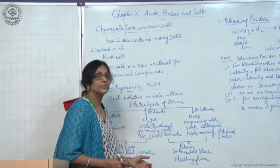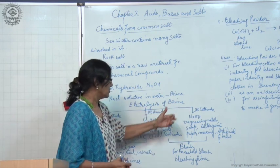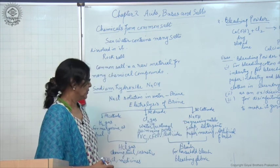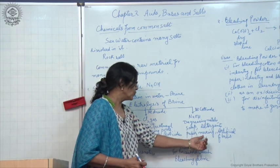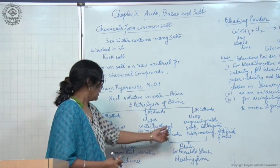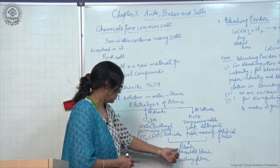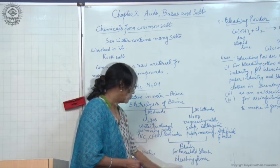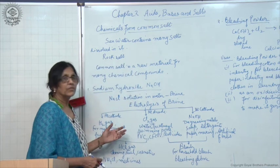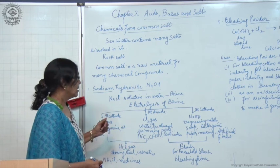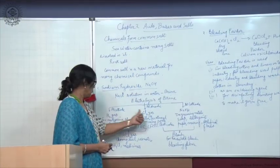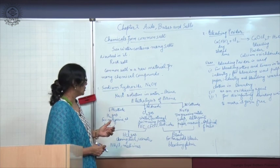NaOH is another compound which is liberated near cathode. It is used for degreasing metals, for making soaps and detergents, and for making paper and artificial fibers. NaOH and Cl2 are used to make bleach, household bleach, and for bleaching fabric. Now we will study what are the different compounds we can make from common salt or these elements and compounds which are obtained by electrolysis of brine.